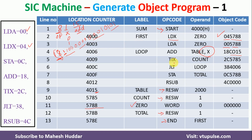For TIX COUNT, it is direct addressing mode. The TIX opcode value is 2C, and COUNT is at address 5785, so the object code is 2C5785. For JLT LOOP, JLT is 38 and LOOP is at address 4006, giving 384006. For STA TOTAL, STA is 0C and TOTAL is at 578B, giving 0C578B. For RSUB, there is no operand, the opcode is 4C, and we put 0 for the address, giving 4C0000. For RESW and END, as mentioned, there is no object code, so we leave those blank.